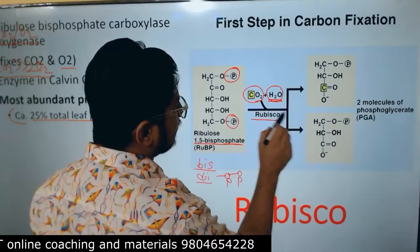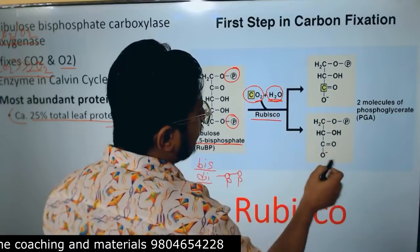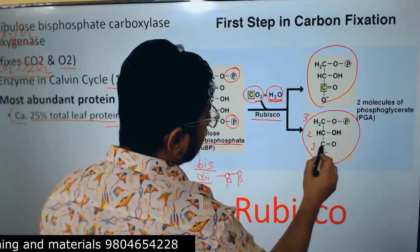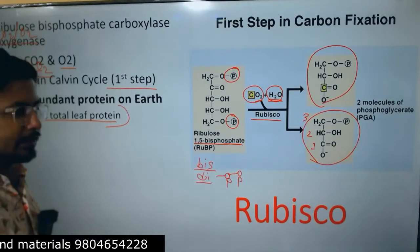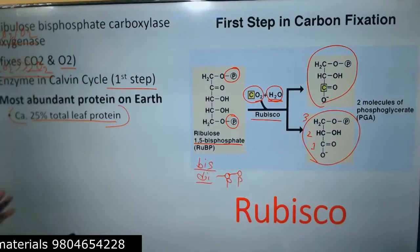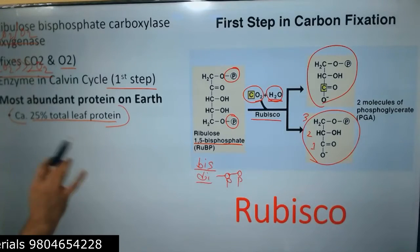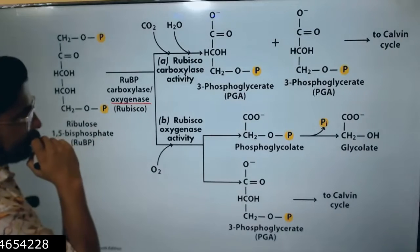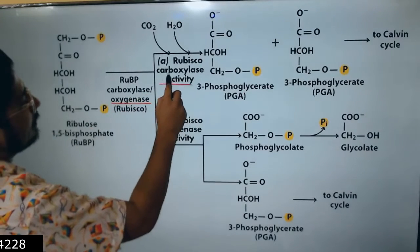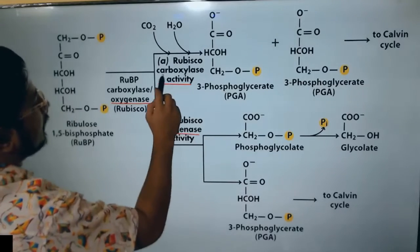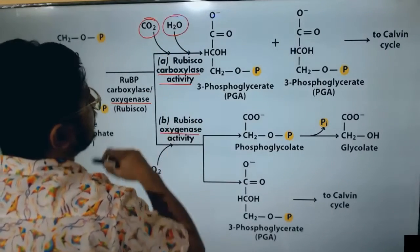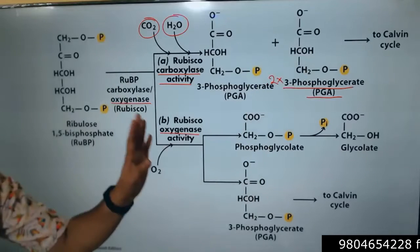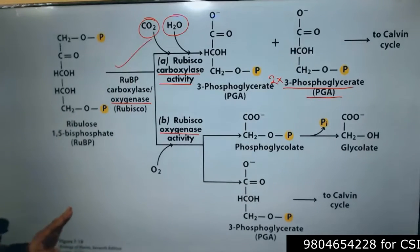CO2 and water are needed in the carboxylase reaction. The CO2 attaches and splits, producing two molecules of 3-phosphoglycerate (phosphoglyceric acid). This is the normal reaction Rubisco is involved in — carboxylase activity where CO2 is fixed. Water is needed, it splits into 3-phosphoglycerate, and two such molecules are produced. This is the desired, normal process.